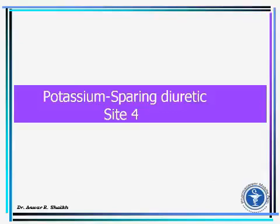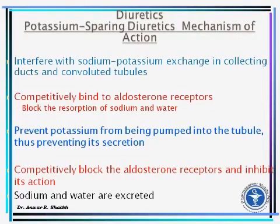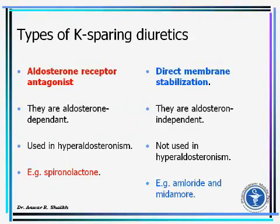Potassium-sparing diuretics (site 4): they interfere with sodium-potassium exchange in the collecting duct and convoluted tubule. They competitively bind to aldosterone receptors and block the reabsorption of sodium and water, and prevent potassium from being pumped into the tubule, thus preventing its secretion. There are two types: aldosterone receptor antagonists — spironolactone — and direct membrane stabilizers — amiloride and triamterene.